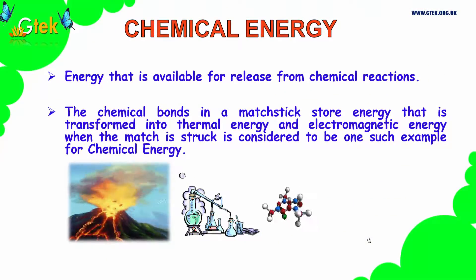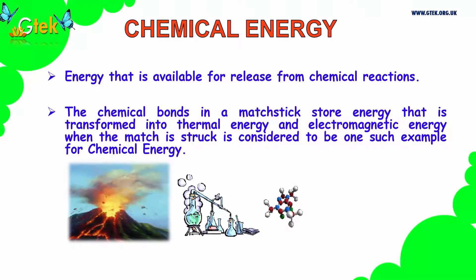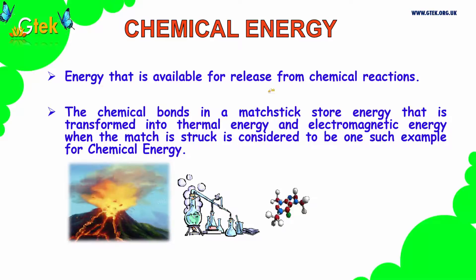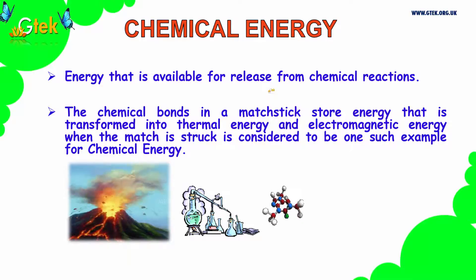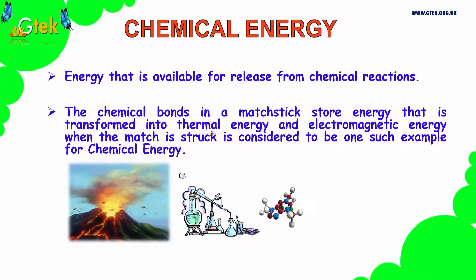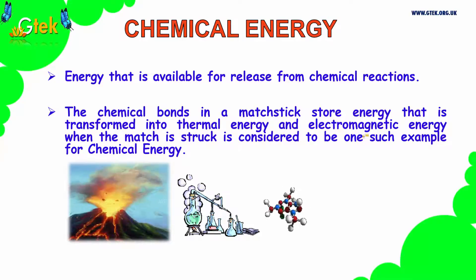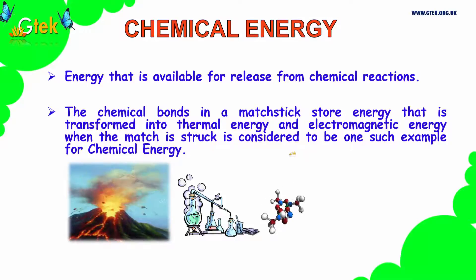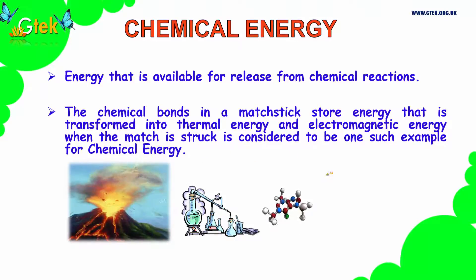Now let's talk about chemical energy. Chemical energy is the energy that is available for release from chemical reactions. The chemical bonds in a match strip store energy that is transformed into thermal energy and electromagnetic energy — that is, when the match is struck, which is considered as one example of releasing chemical energy.